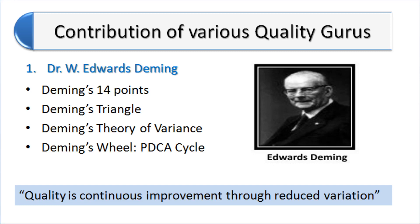He contributed to TQM by demonstrating 14 points. He also contributed Deming's Triangle, Deming's Theory of Variance, and the seven deadly sins and diseases of management. He showed management the Theory of Variance and Deming's Wheel, which is nowadays known as the PDCA cycle. He gave the definition of quality as follows: quality is continuous improvement through the reduction of variation.